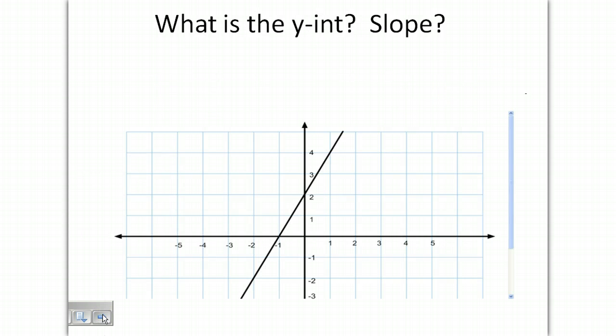Alright, here's a graph. We're looking for points. We have a point here at negative 1, 0, and a point here at 0, 2. Now if we look at this, we rise 2, so our slope is going to be 2, and our run is 1. So our slope is 2 divided by 1, which is 2.